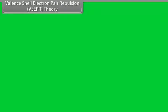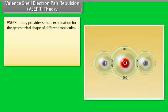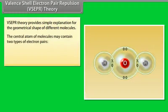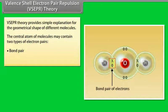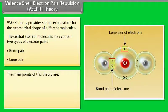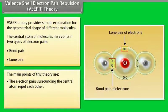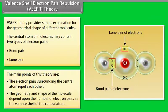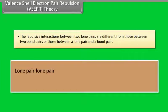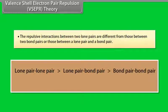Valence Shell Electron Pair Repulsion (VSEPR) Theory provides a simple explanation for the geometrical shape of different molecules. The central atom of molecules may contain two types of electron pairs: bond pairs and lone pairs. The main points of this theory are: the electron pairs surrounding the central atom repel each other; the geometry and shape of the molecule depend upon the number of electron pairs in the valence shell of the central atom; and the repulsive interactions between two lone pairs are different from those between two bond pairs or between a lone pair and a bond pair.